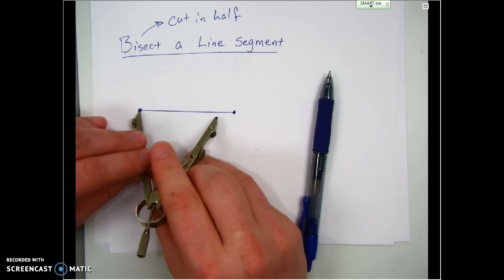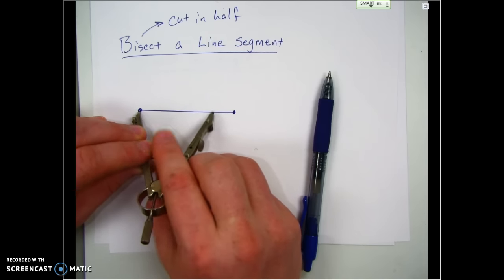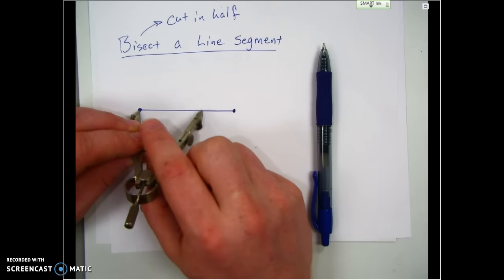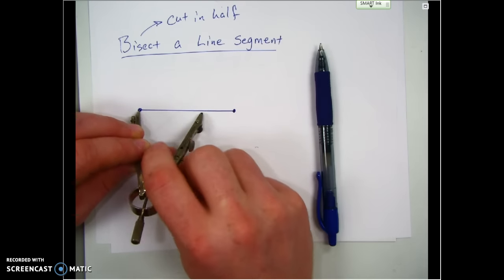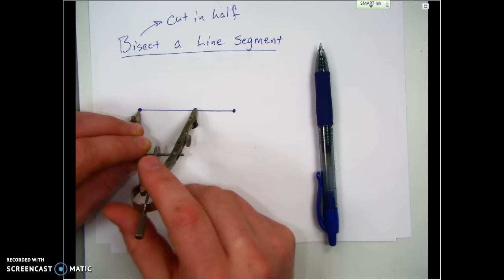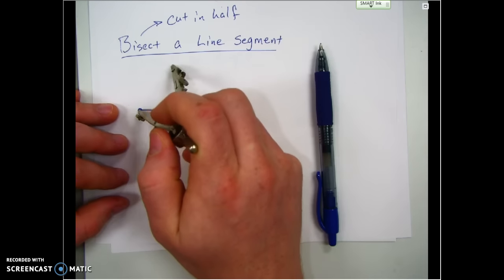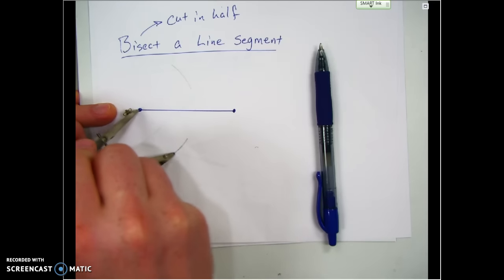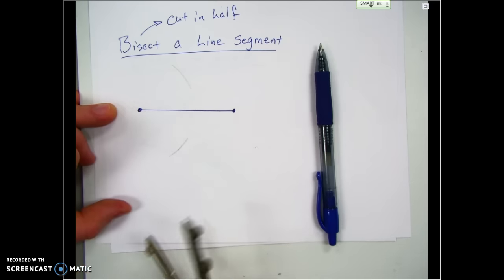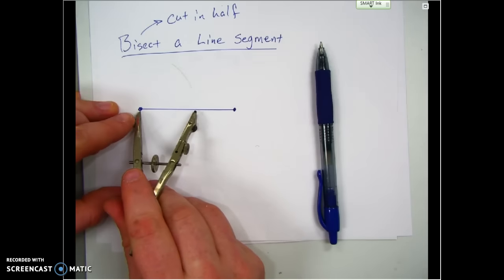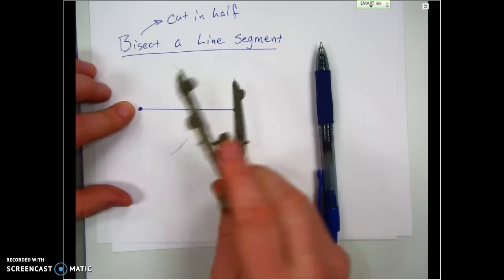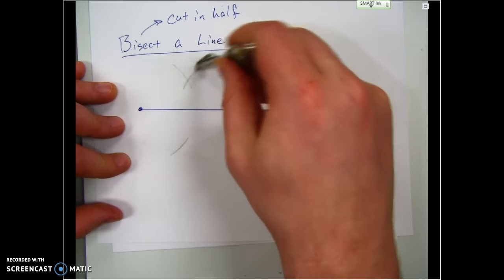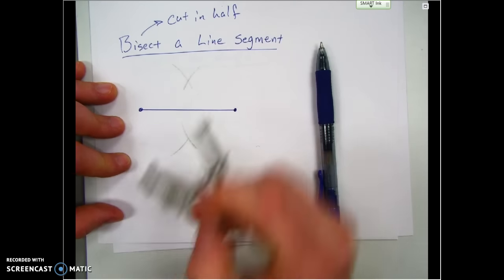A couple tricks here. I want the width of my compass to be between half of the line segment and the full end of the line segment to make this easiest. I'm going to make an arc above the line and an arc below the line. Then I'm going to put the pointy end at the other end point and do the same thing — make a mark above the line and mark the arc below the line.